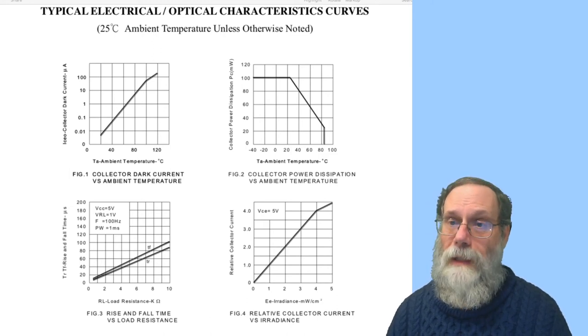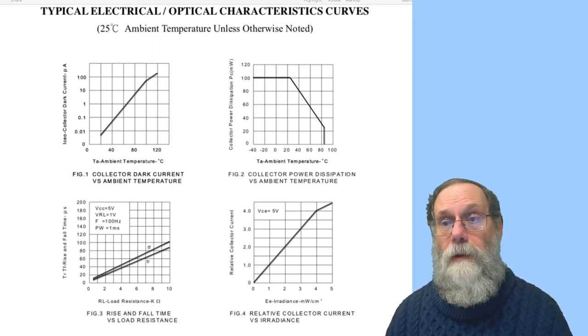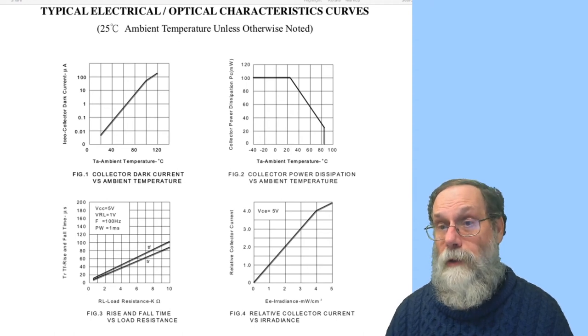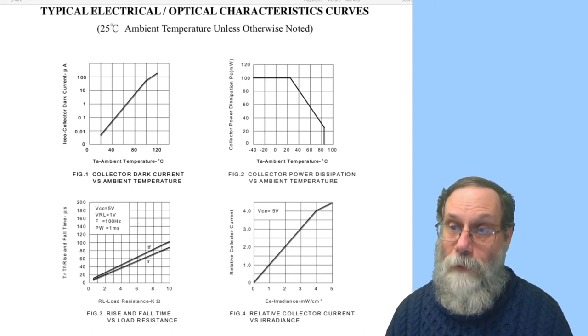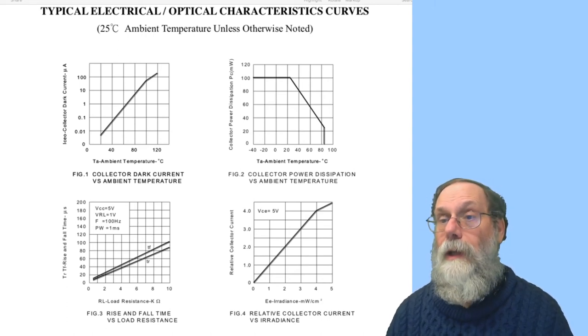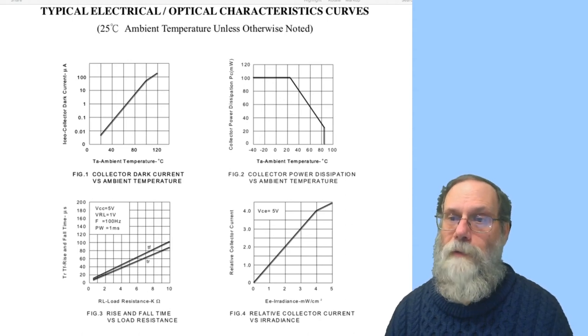So if you're looking for a very linear sensor, a photodiode can be better than a phototransistor. It doesn't provide as much current. But if you need to do both very low levels and very high levels in a very linear way, then the photodiode gives you more linearity.